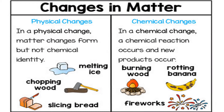We also discussed two types of changes that occur in matter: physical changes and chemical changes. In a physical change, matter changes form but not chemical identity — the substance remains the same and does not lose its major properties. Examples include melting of ice, chopping wood, or slicing bread. In a chemical change, a chemical reaction occurs and new products are formed with different properties than the original substance. Examples include burning of wood, a rotting banana, and fireworks.